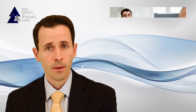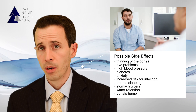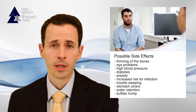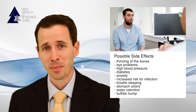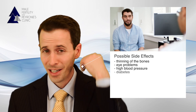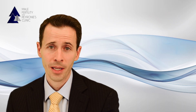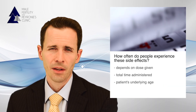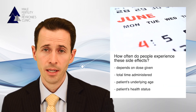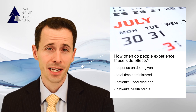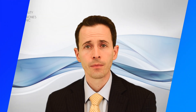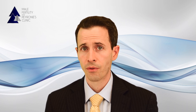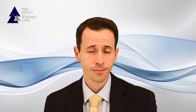What are the side effects of steroids and NSAIDs? Steroids such as prednisone or Medrol have a large number of side effects, including thinning of the bones (osteoporosis), eye problems such as glaucoma and cataracts, high blood pressure, diabetes, increased risk for infection, anxiety, difficulty sleeping, stomach ulcers or reflux, puffy face with water retention, development of a buffalo hump, and many more. How often people experience these side effects depends completely on the dose, total time administered, the patient's underlying age, and health status. A medium to high dose is usually defined as 7.5 mg daily or above.